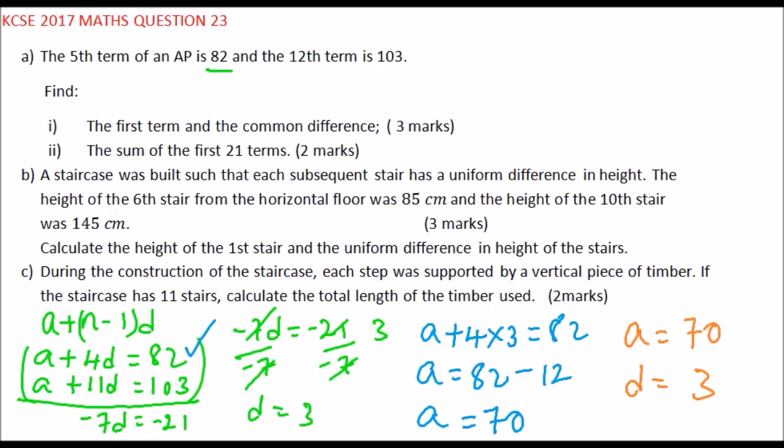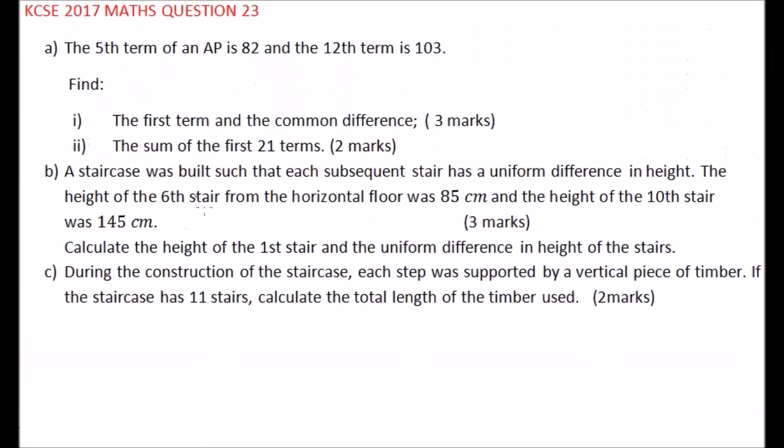That's how you work it out. You earn yourself 3 marks. Part B: the sum of the first 21 terms. The general formula of finding the first N terms is written like S_N is equal to N over 2 into bracket 2A plus N minus 1 into bracket D.